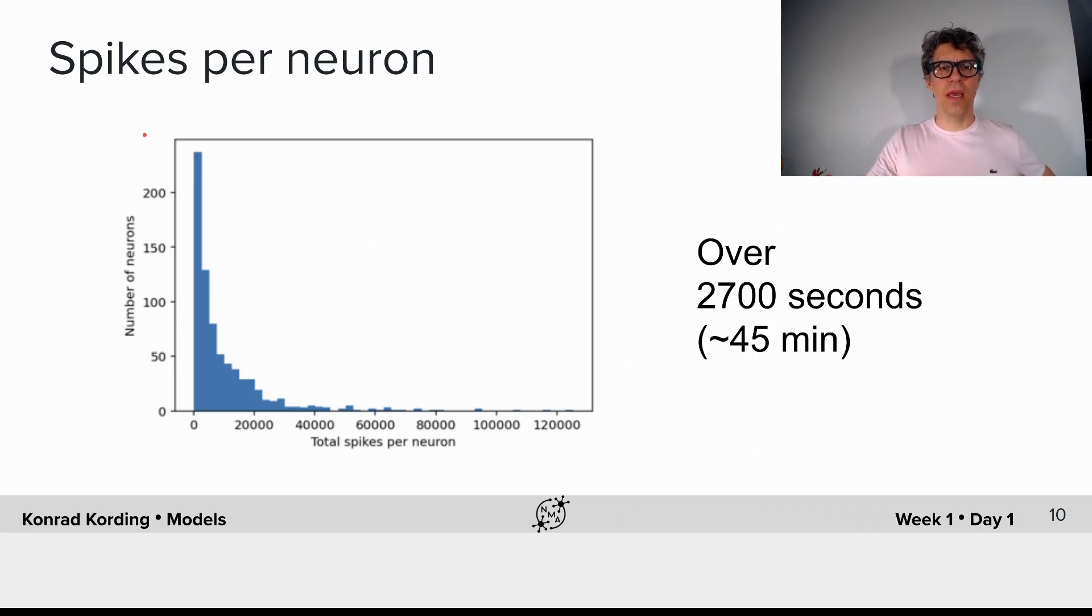What do we find here? If we look at the histogram of spikes per neuron, we find that there are some neurons that fire very rarely. In fact, there's a good number of neurons that only fire a couple thousand times during the 45 minutes of recording.